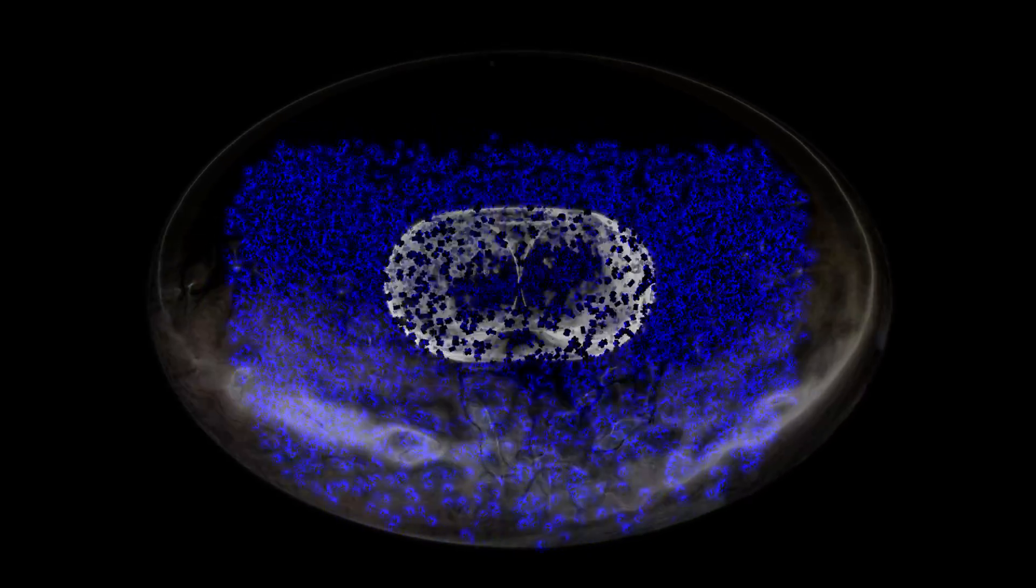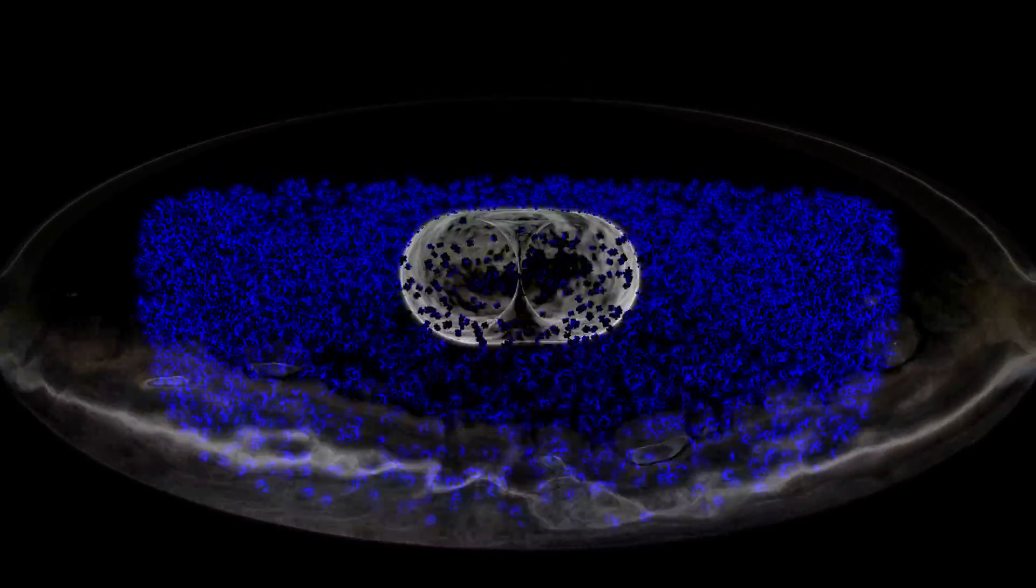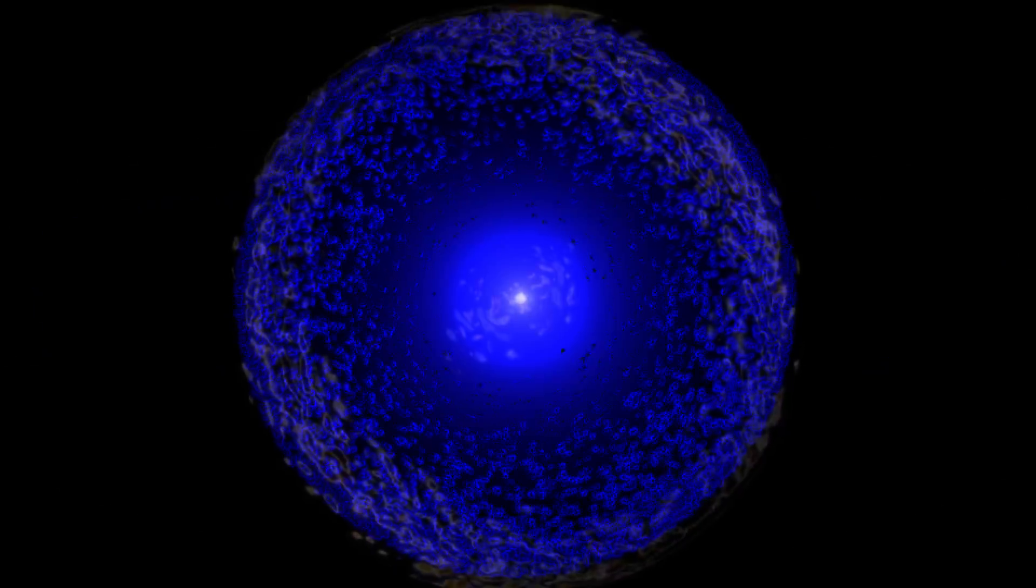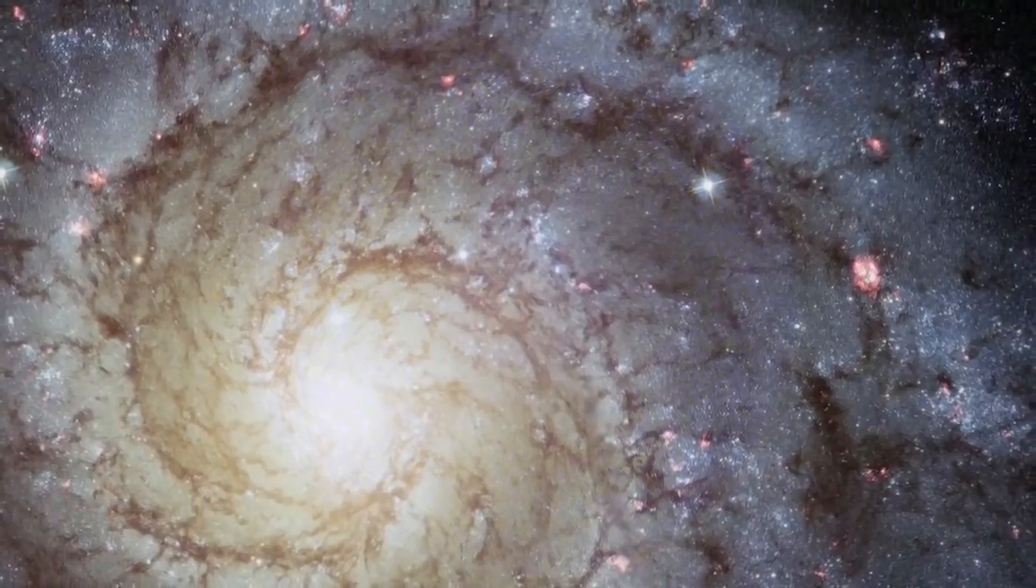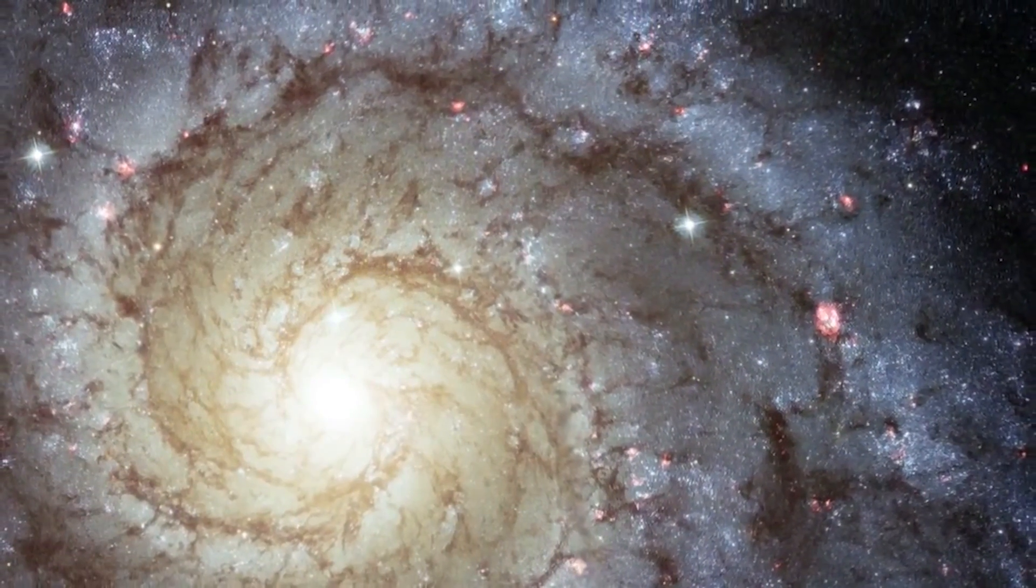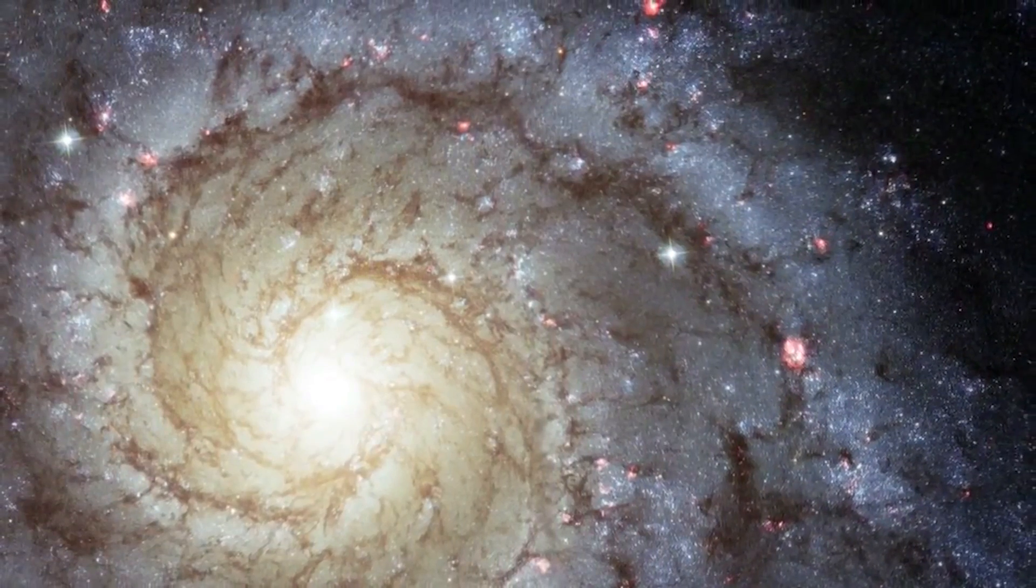Over billions of years, the spinning supermassive black hole and all the orbiting matter of the galaxy drag the space-time in the galaxy, until the galactic space-time disk itself is spinning as well. Maybe the spiral in a galaxy is like a stopped clock, which shows how long it took for the entire disk of space-time to start spinning.